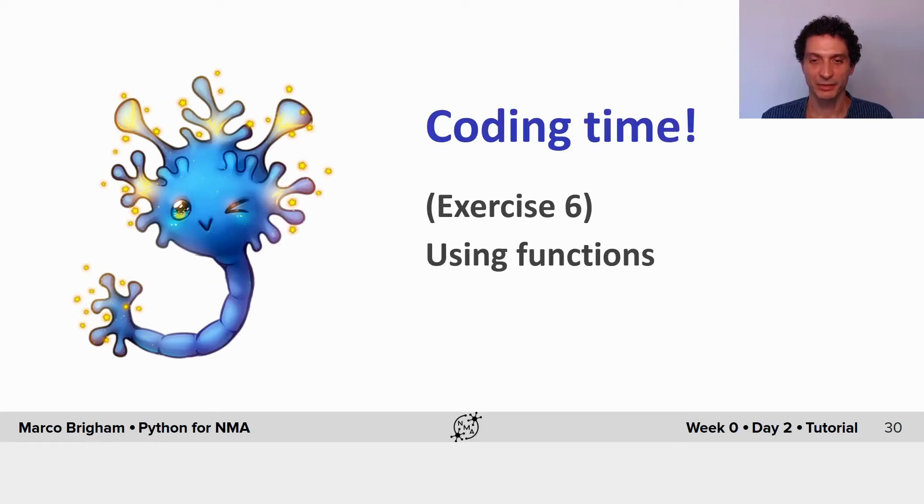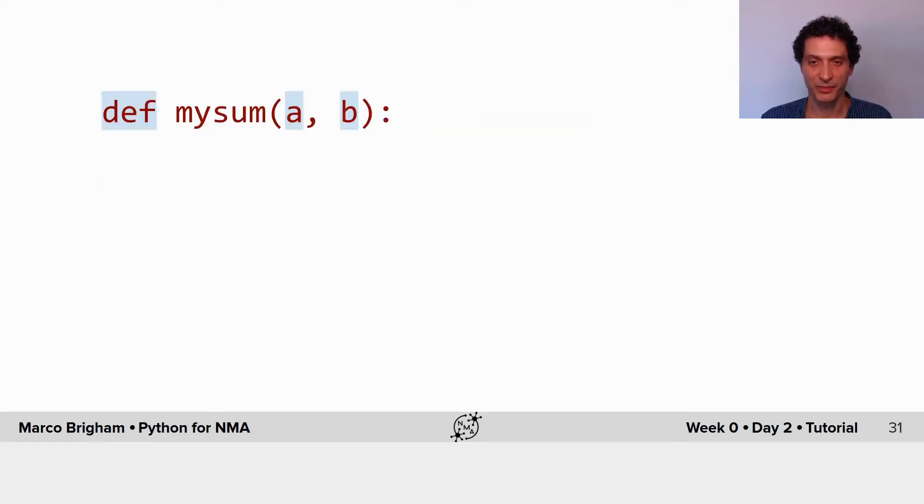Welcome to exercise 6, using functions. Let's recap how we define a function with the command def, name of the function and then our variables and colon.